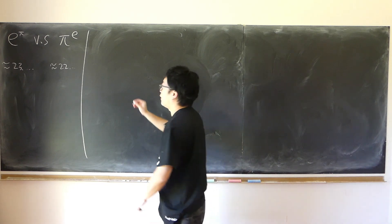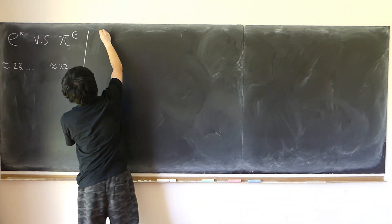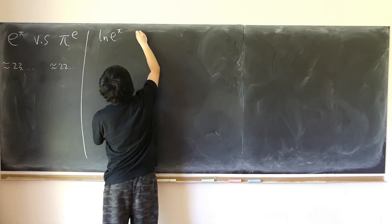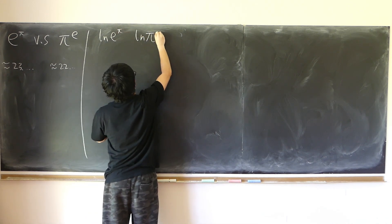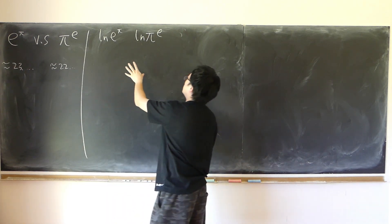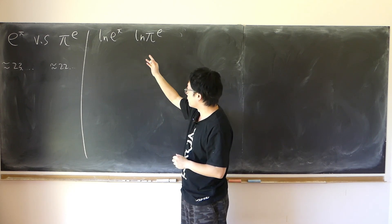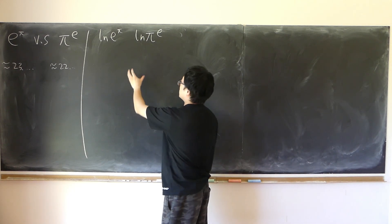but still have to verify. So all we have to do is to compare log of e to the pi and log of pi to the e. This is meaningful because both e to the pi and pi to the e are both positive, and log is an increasing function. So this is enough.